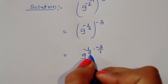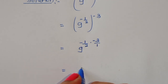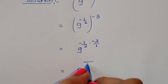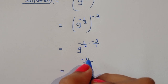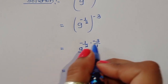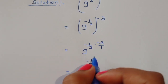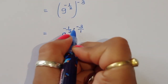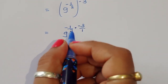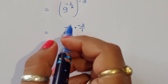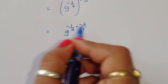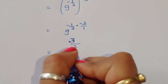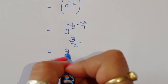Now we can write this as 9 power (minus 1 by 2) times (minus 3). It is a multiplication of exponents — not LCM. So minus 1 times minus 3 gives positive 3, and the denominator stays 2. So we get 9 power 3 by 2.